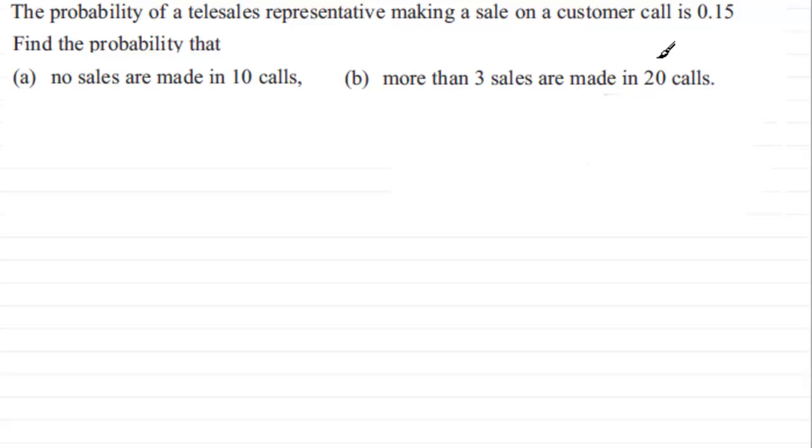So what kind of distribution have we got here? Well, it's going to be a binomial model because we've got a finite number of trials - 10 in the first case and 20 in the second case.